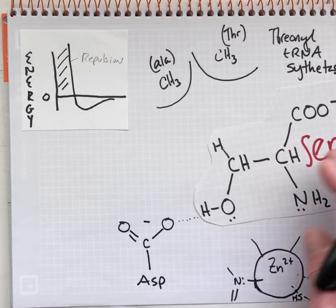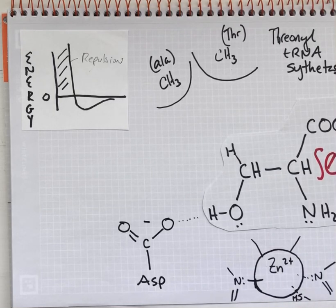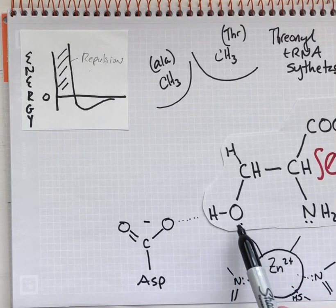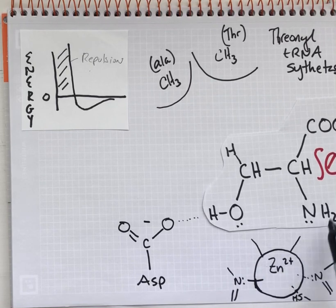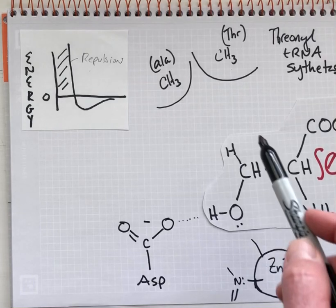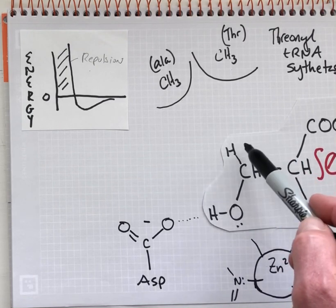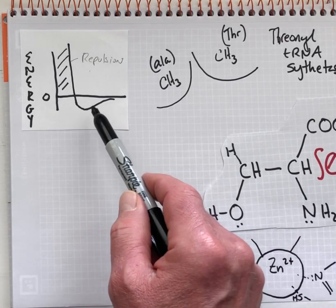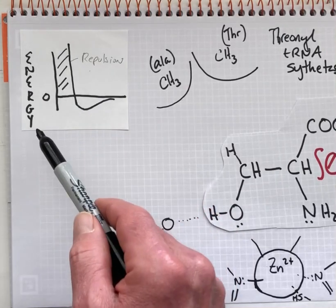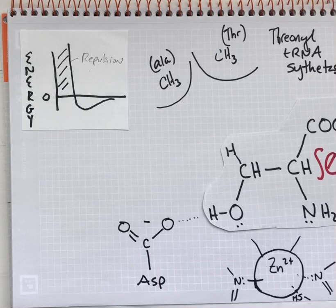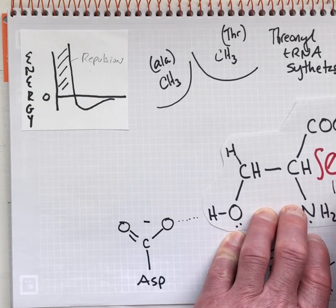Now let's look at what happens when serine ventures into the specificity pocket. Serine has the hydroxyl group, so it is able to make the hydrogen bond with aspartate. It can make a metal coordination bond, both with the amino group and with the hydroxyl group. The only thing missing is a little bit of favorable van der Waals contact — there's some empty space because the methyl group has been replaced by just a hydrogen. So we have reduced attractive energy, but no repulsive steric conflict with serine, and serine will be misactivated — misacylated onto the tRNA that's supposed to be decoding threonine codons — at about the 1% level.